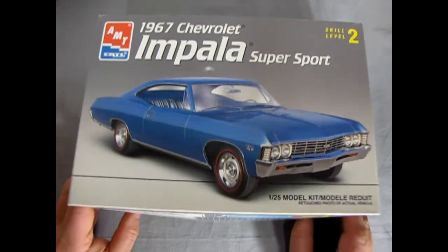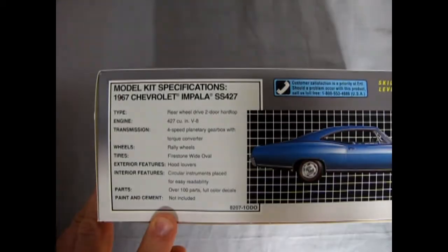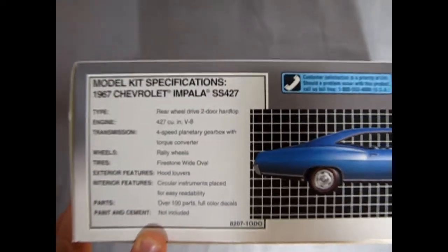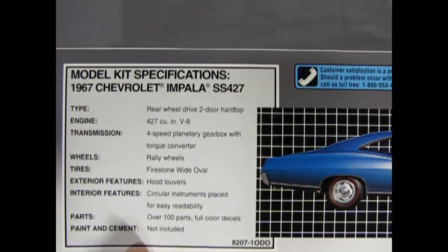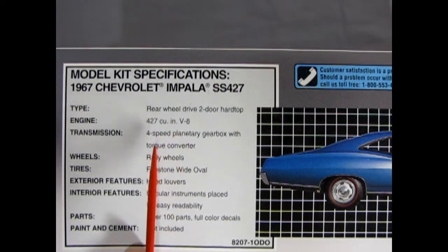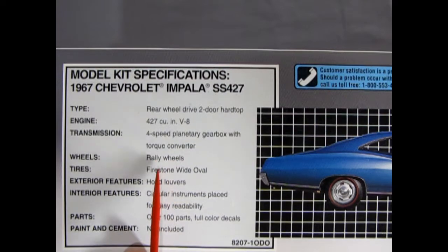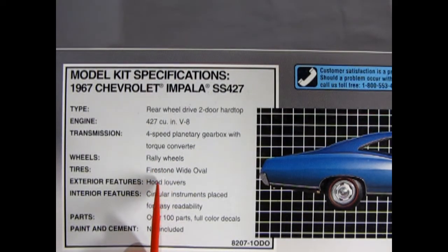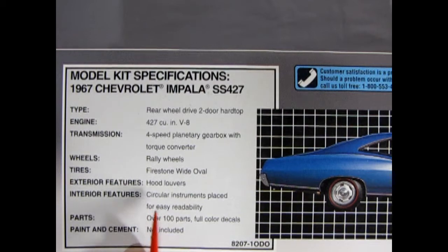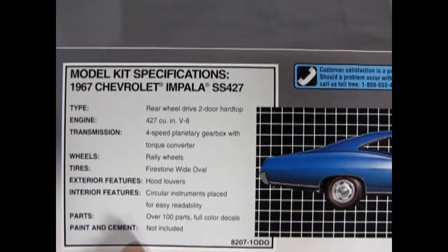So let's take a look at the side of the box here. We get quite a bit of detail going on in the explanation. We get a rear-wheel drive two-door hardtop with 427 cubic inch engine, four-speed planetary gearbox with a torque converter, rally wheels, Firestone wide ovals, hood louvers, circular instruments placed for easy readability, over 100 parts, full-color decals. Paint and cement is of course not included.